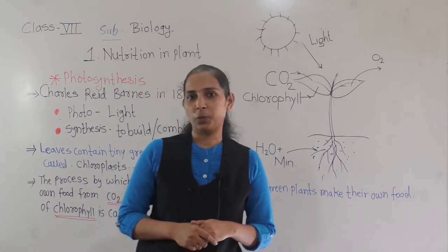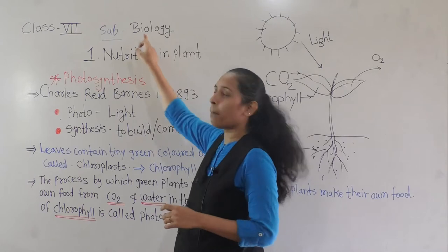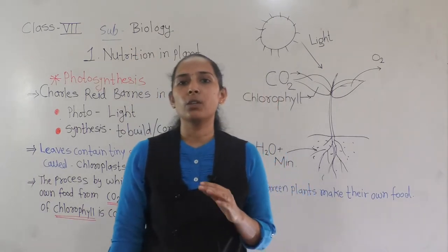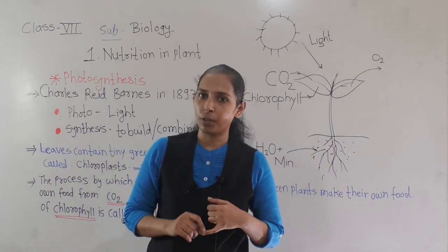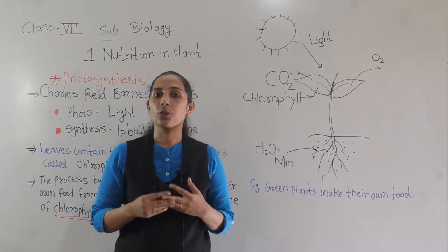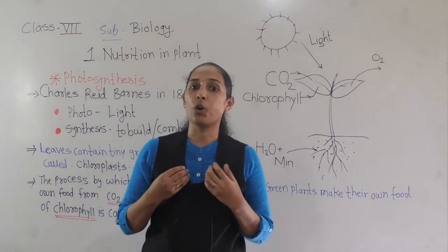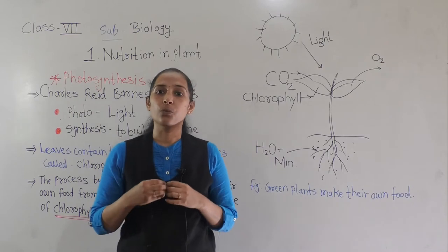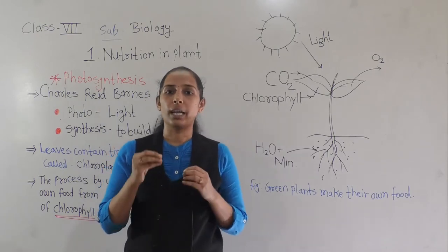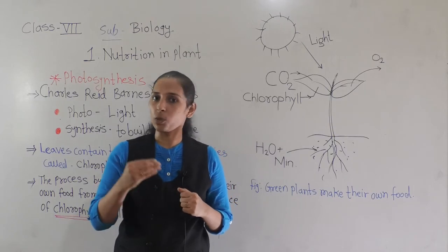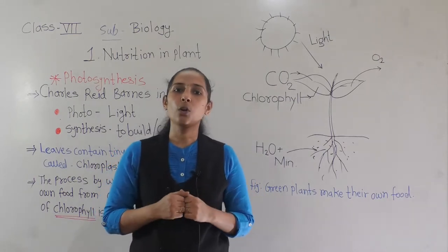Good morning dear students. Yesterday we started our first lesson on nutrition in plants from biology. We discussed the two modes of nutrition: autotrophic mode and heterotrophic mode. Autotrophic means those who make their own food, while heterotrophic means those organisms that depend on others for their food. Green plants are the example of autotrophs.